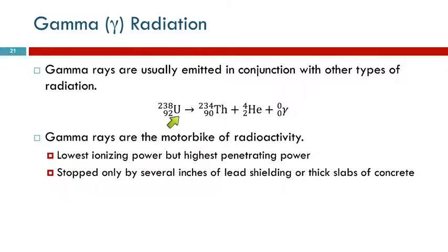Gamma rays are emitted in conjunction with other types of radiation. For example, uranium-238 undergoing alpha decay also emits gamma radiation. How would you know? A researcher would have to measure and detect it. If a problem says gamma radiation is emitted, you include the symbol; otherwise, don't worry about it. It's not a big deal in terms of writing equations, but you should know what it is and its characteristics.